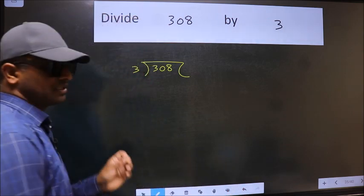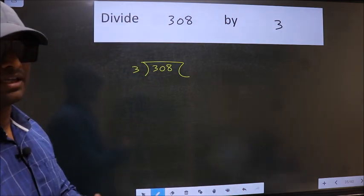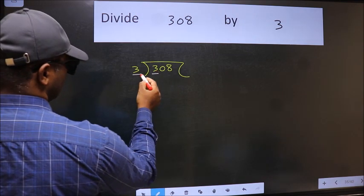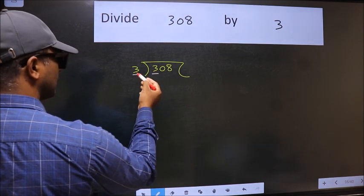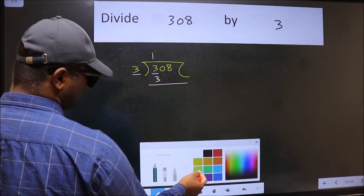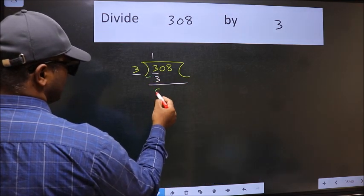This is step 1. Next, here we have 3, and here also 3. When do we get 3 in the 3 table? 3 times 1 is 3. Now, we should subtract. We get 0.